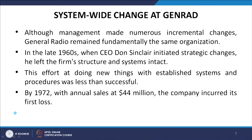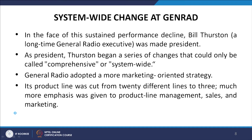After World War II, however, increasing technological and cost-based competition began to erode General Radio's market share. Although management made numerous incremental changes, General Radio remained fundamentally the same organization. In the late 1960s, when CEO Don Sinclair initiated strategic changes, he left the firm's structure and systems intact. The effort at doing new things with established systems and procedures was less than successful. By 1972, with annual sales at $44 million, the company incurred its first loss. In the face of this sustained performance decline, Bill Thurstone, a long-time General Radio executive, was made President.